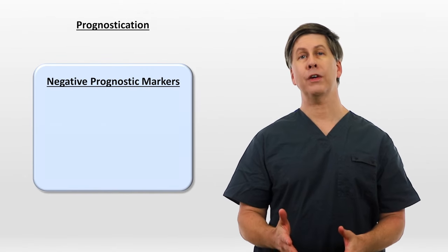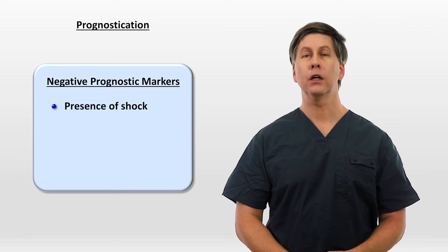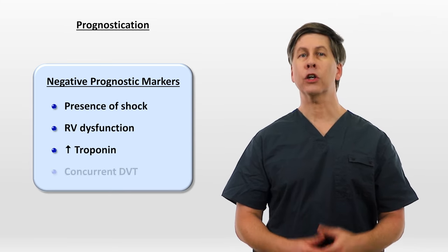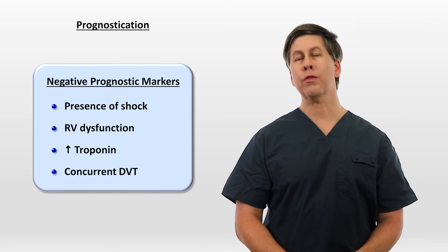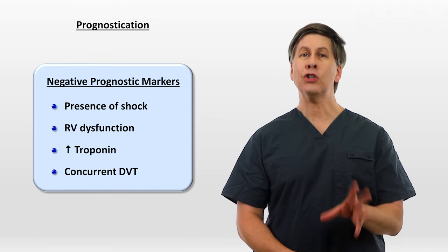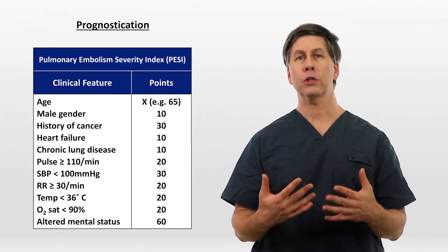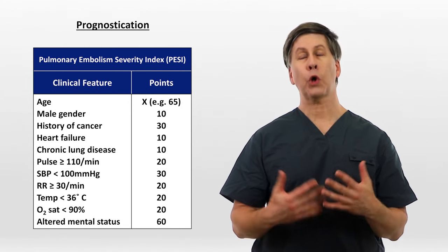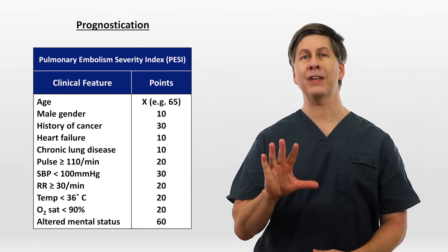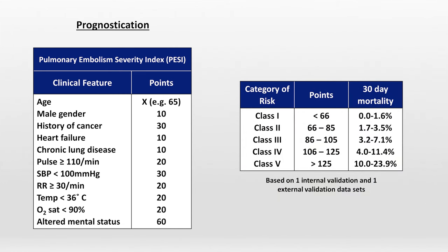A lot has been written about prognostication following acute PEs. Some key markers for having a poor short-term outcome include the presence of shock, RV dysfunction, an elevated troponin, and a concurrent DVT — presumably since it means there is more thrombus left to potentially embolize. There is also a commonly used clinical prediction tool called the Pulmonary Embolism Severity Index, which assigns points to a variety of features related to demographics, history, and physical exam. The total points result in assignment to one of five categories of risk for 30-day mortality, ranging from 0–1.6% in the lowest category to 10–24% in the highest.